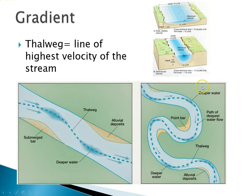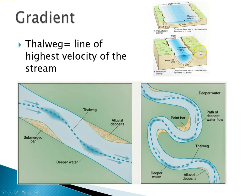Looking at the cross section of the stream: here's the bed of the stream and here are the banks. There's an area in the middle of the stream where the water is going the fastest — if you've ever been Salt River tubing, you've probably found this. You want to get your inner tube to the middle of the stream where you'll go the fastest. This is called the thalweg — the line of highest velocity along the stream. The thalweg is usually found towards the center of the stream just below the surface, because the bed and the banks cause friction and drag, and the surface also has air friction, so the maximum velocity sits just below that.